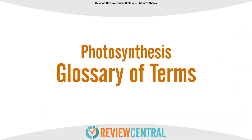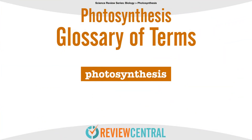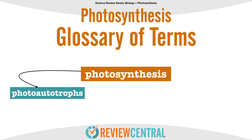Let's review some of the new terms we've learned today in relation to photosynthesis. Photosynthesis is the process plants and other organisms use to convert carbon dioxide, water, and sunlight into food. It came from the Greek words photo, which means light, and synthesis, which means putting together or to combine things. Photoautotrophs are organisms that carry out photosynthesis; known photoautotrophs include most plants, most algae, and some bacteria.